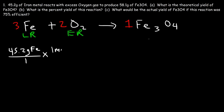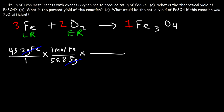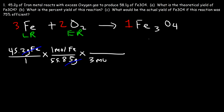The molar mass of Fe is 55.85 grams per mole, so the unit grams of Fe will cancel. Now let's change the substance from Fe to Fe3O4 — it's a three-to-one ratio. For every three moles of iron metal that reacts, one mole of Fe3O4 will be produced. Now let's convert this back to grams.